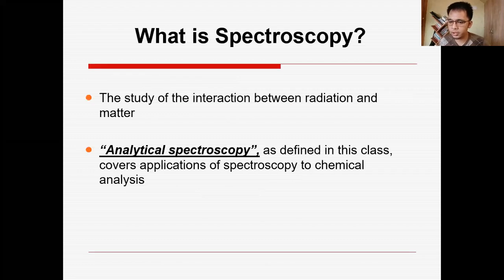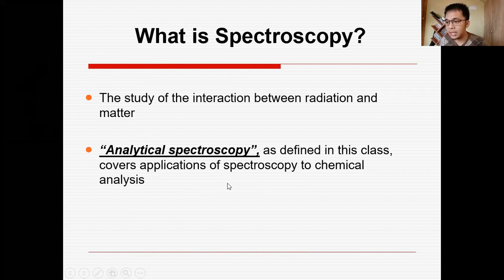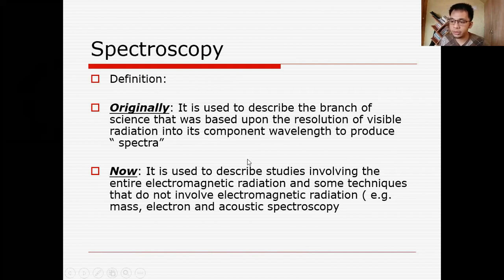So spectroscopy — what is spectroscopy? It is the study of interaction between radiation and matter. When we apply spectroscopy to analytical chemistry, it covers the application of spectroscopy to chemical analysis, since analytical chemistry is all about quantification of samples by conducting chemical analysis. Originally, the definition of spectroscopy was used to describe the branch of science that deals with the resolution of visible radiation into its component wavelengths to produce specific spectra.